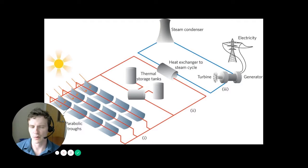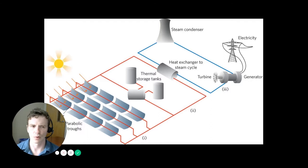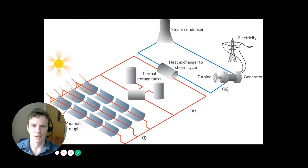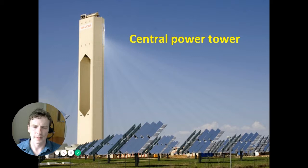The key advantage with concentrated solar power and the use of a working fluid like molten salt that can be stored is that concentrated solar power can actually be a dispatchable form of generation. You could conceivably generate electricity even when the sun is not shining, because you harvest that heat from the sun when it is shining, store it, and dispatch electricity at a later point in time.